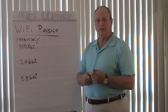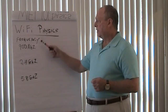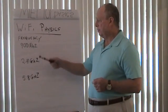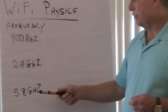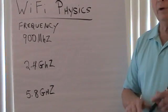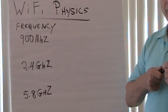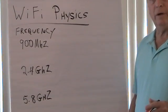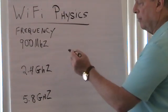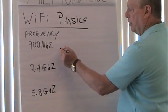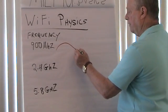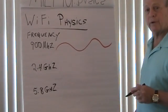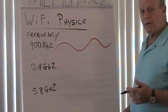Let's talk about Wi-Fi physics. There are three unlicensed frequencies in the United States: 900 megahertz, 2.4 gigahertz, and 5.8 gigahertz — all unlicensed Wi-Fi bands. 900 megahertz has great penetration qualities. The reason is that when it broadcasts a sine wave, the sine wave is very relaxed. It has terrific penetration for trees, concrete, etc.